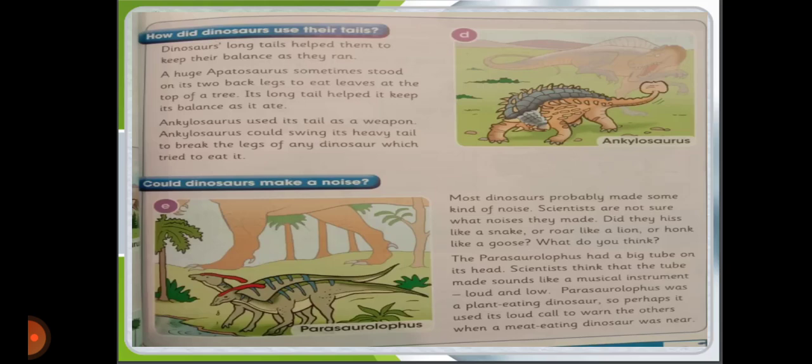How did dinosaurs use their tails? Dinosaurs' long tails helped them keep their balance as they ran. A huge Apatosaurus sometimes stood on its two back legs to eat leaves at the top of a tree, and its long tail helped it keep balance as it ate. Ankylosaurus used its tail as a weapon — it could swing its heavy tail to break the legs of any dinosaur that tried to eat it.